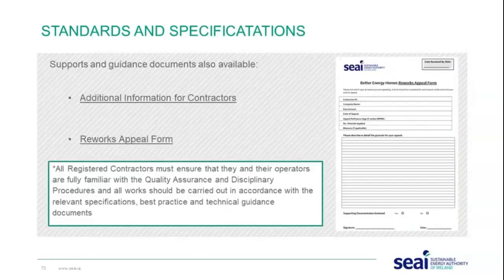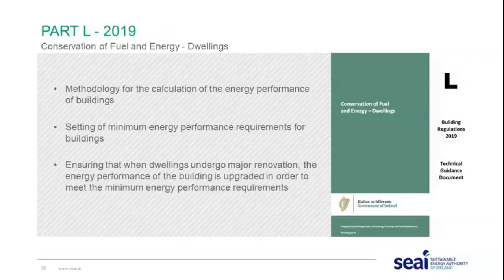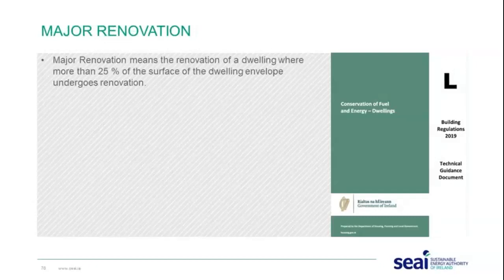Moving on to Part L of the Building Regulations — the conservation of fuel and energy in dwellings. This provides methodology for the calculation of energy performance of buildings, sets minimum energy performance requirements, and ensures that when buildings undergo major renovation the energy performance is upgraded to meet those requirements. A major renovation means the renovation of a dwelling where more than 25% of the surface of the dwelling envelope undergoes renovation.